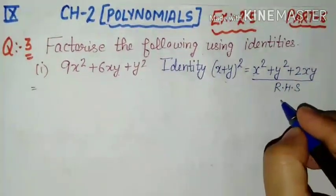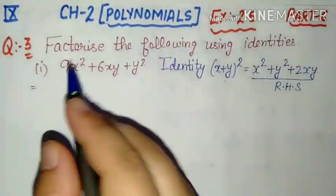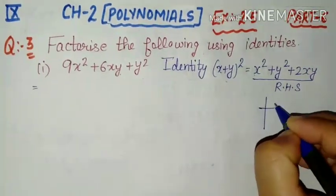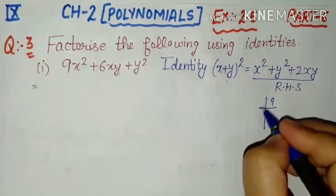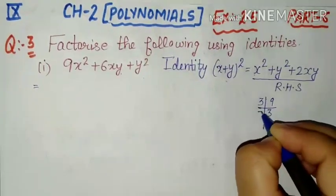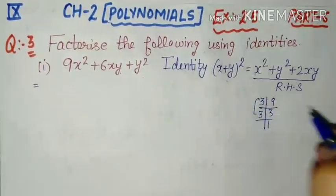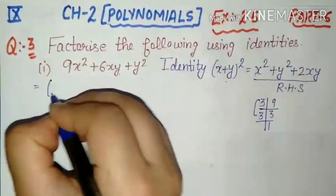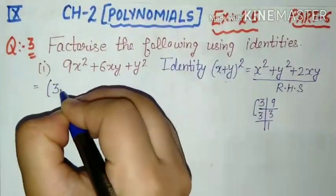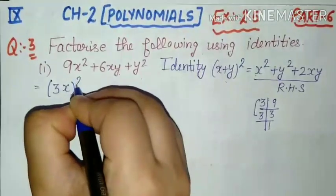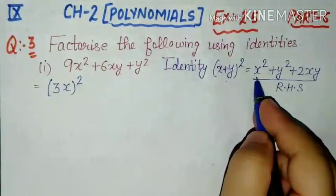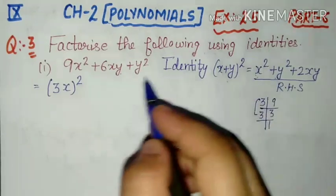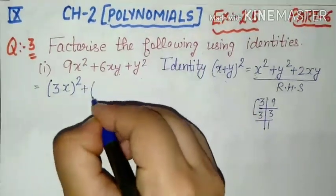Square ke liye: humhe pata hai 9 — 3 ka square hai. Agar nahi pata to hum uske aise factors banakar dekh sakte hain: 9 mein 3×3=9, 3×1=3 — 3 ka pair ban raha hai, means woh 3 ka square hai. So 9 ki jagah 3, aur x² ki jagah x. To 3x ka square. First humne square wali term check kar li. Next humne check karenge: second term kiska square hai? y ka square hai simply. To hum simply usko likh sakte hain y².